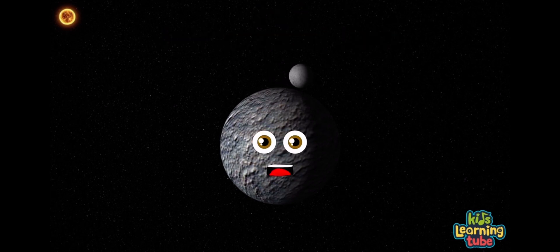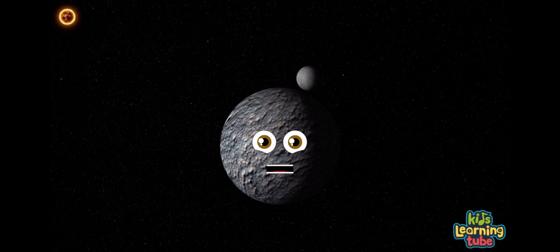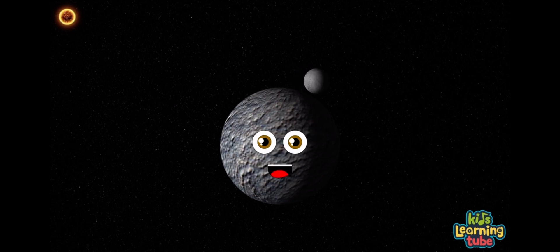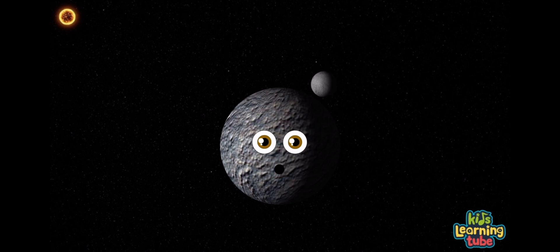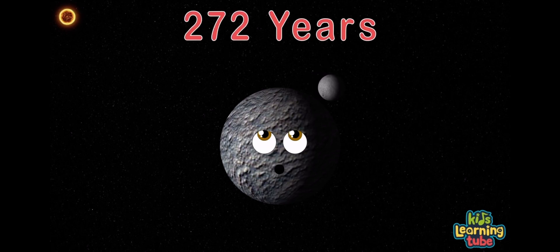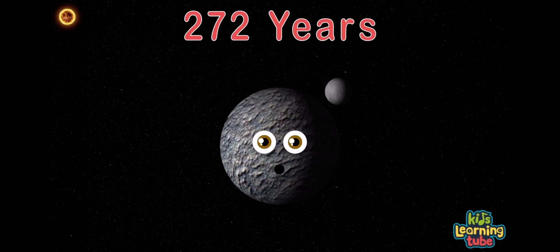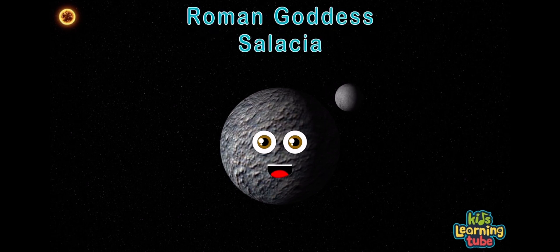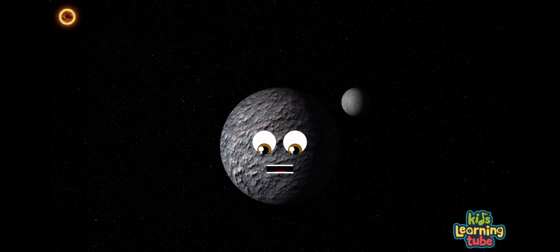My orbital distance is slightly greater than Pluto. I orbit 272 years, of this I will show. I was named after the Roman goddess Salacia, you have learned. My radius is 281 miles as I turn.